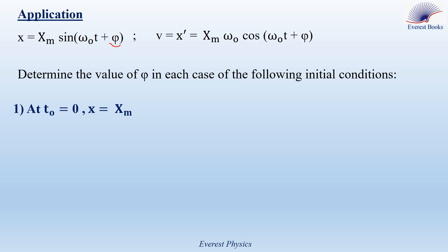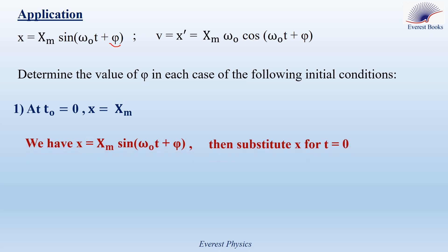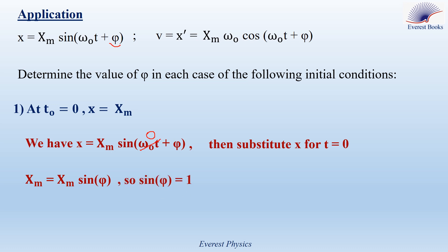First initial condition: at t0 equals 0, x equals xm. Substituting x equal xm and t equal 0 into the time equation, we get xm equals xm sine phi. Then sine phi equals 1. As you know, when sine phi equals 1 we have only one value of phi, which is pi over 2 radians.